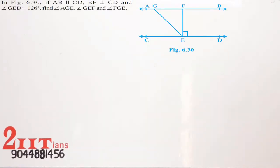In figure 6.30, if AB is parallel to CD, EF is perpendicular to CD, and angle GED equals 126 degrees, find angle AGE, angle GEF, and angle FGE.